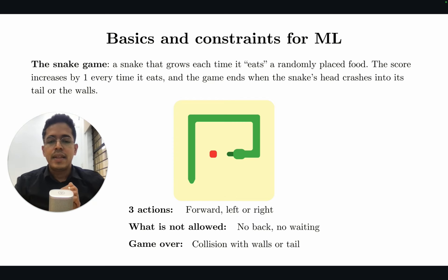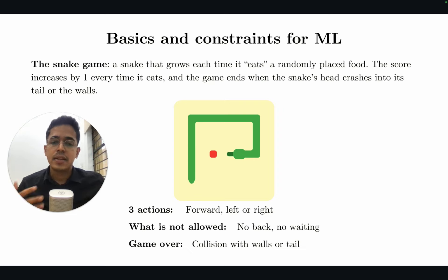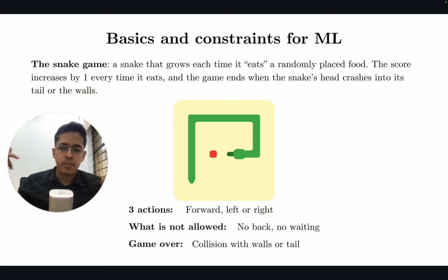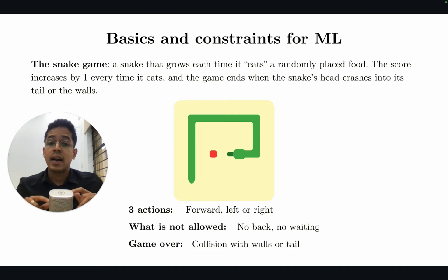Going back is not allowed — if the snake is going from left to right, you cannot press the left button to make it go backwards. Between two moments there is no waiting; the snake continuously goes forward if no key is pressed. We'll define the walls as hard boundaries, so if the snake hits the wall, it will die. These are the constraints we will impose to make this game trainable using an ML model.